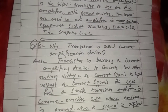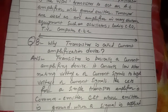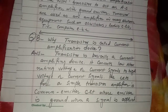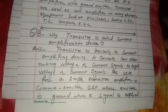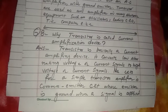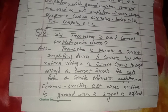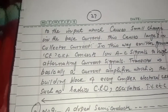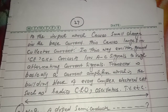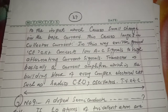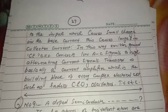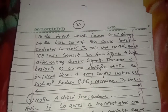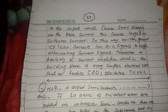Question number 8, very important: why is a transistor called a current amplification device? A transistor is basically a current amplifying device. It converts a low alternating voltage or low current signal to a high voltage or current signal. The circuit for a simple transistor amplifier is a common emitter circuit where the emitter is grounded. When a signal is applied to the input, it causes a small change in the base current, which causes a large change in the collector current. In this way, the common emitter CE circuit converts a low signal to a high alternating current signal. Transistor is the building block of every complex electric circuit such as radio, cathode ray oscilloscope, oscillator, TV, etc.